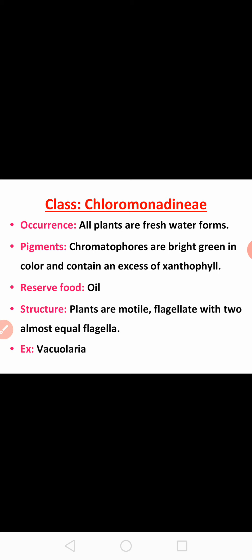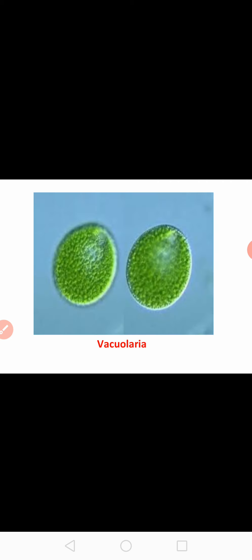Moving on to the next class, Chloromonadine. All members are found in freshwater habitats. Chromatophores are bright green in color and contain an excess of xanthophyll. The reserve food material is oil. Plants are motile with two equal flagella. The example for this class is Vacuolaria.